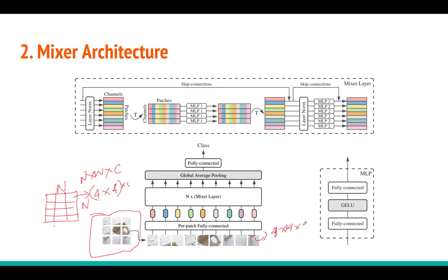What we can do is project these patches — these 3D tensors — into vectors. To project a 3D tensor into a vector, you flatten it by multiplying all three dimensions. For example, 4×4×3 gives 48. This 48-dimensional vector of each patch goes as input to a shared linear projection layer, which gives you a fixed-dimensional vector, say 512 or 64. Now these patches are projected into vectors and you get a sequence of vectors. This idea is borrowed from Vision Transformer.